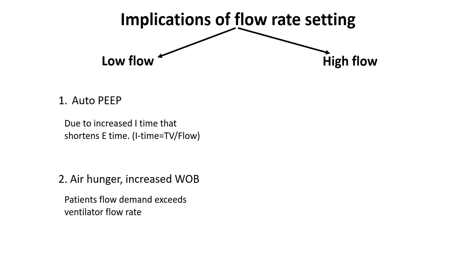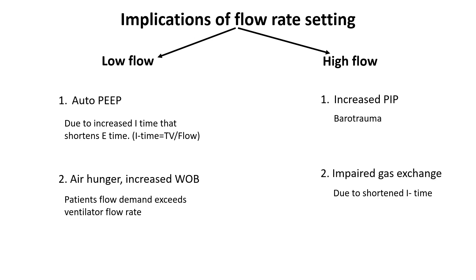A high flow rate can cause the ventilator to deliver air quickly into the lungs, pushing a higher volume of air in a shorter time and raising airway pressures. Elevated peak inspiratory pressure increases the risk of barotrauma. High flow rates may also shorten the inspiratory time, potentially leading to inadequate alveolar ventilation and compromised gas exchange.